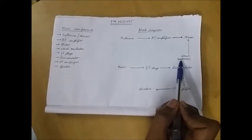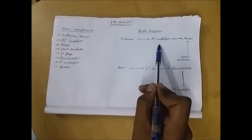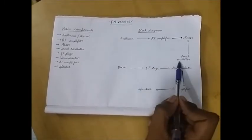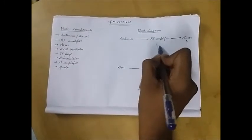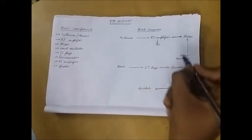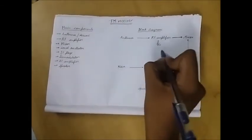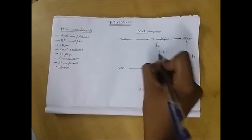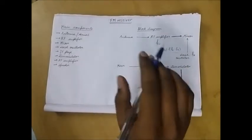Like I will explain it. Mixer receives the frequency fc from the RF amplifier and the frequency fo from the local oscillator. Then the mixer gives fc plus fo and fc minus fo as the frequencies.